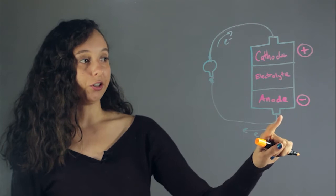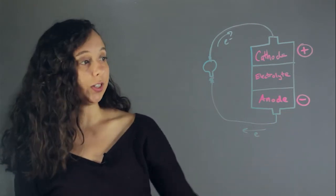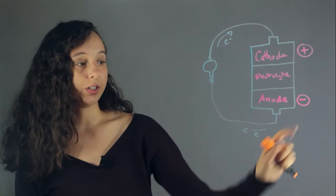The anode's job is to create negative charge, otherwise known as electrons. And once it has all these extra electrons, it wants to get rid of them.